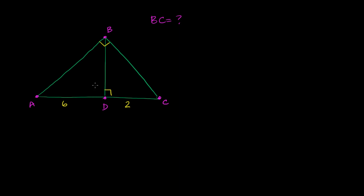There's actually three different triangles that I can see here: this triangle, this triangle, and this larger triangle. If we can establish some similarity here, maybe we can use ratios between sides somehow to figure out what BC is.